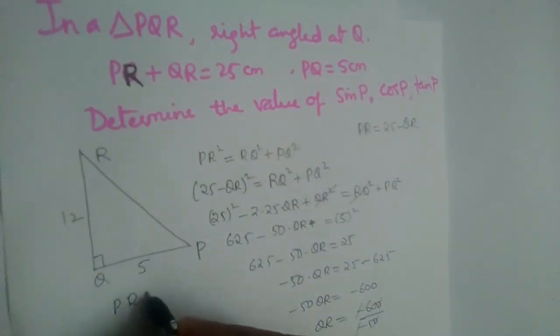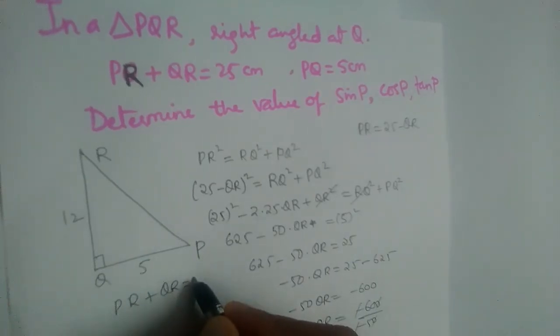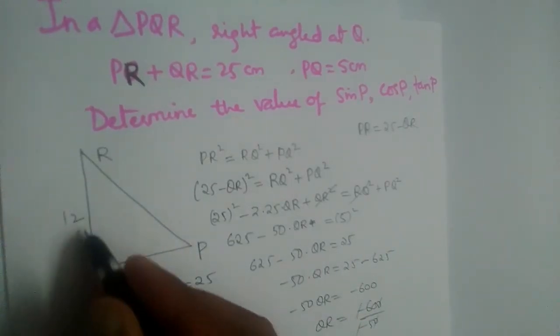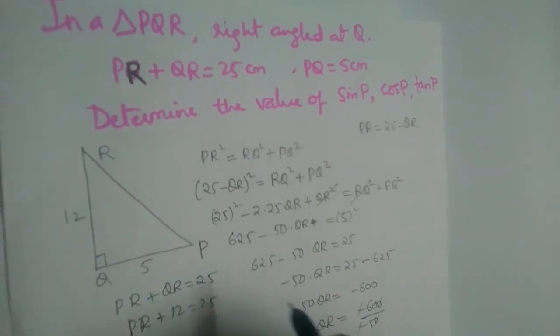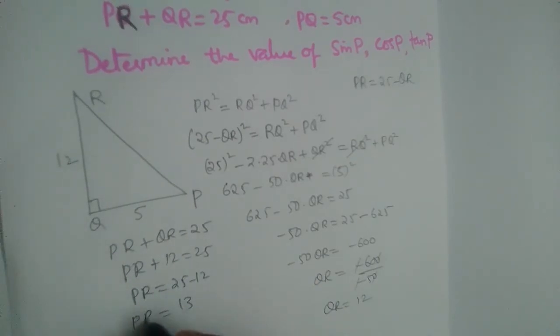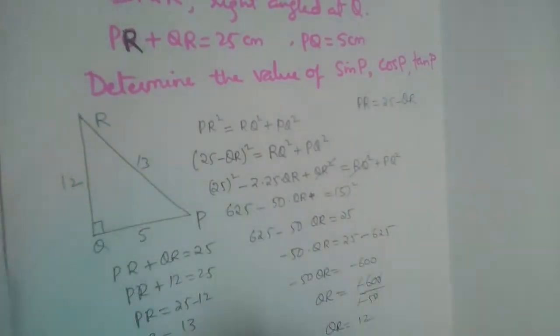But what was given? PR + QR = 25. So PR + QR, we got it as 12, equals 25. So what is PR now? 25 - 12 = 13. So PR is equal to 13.